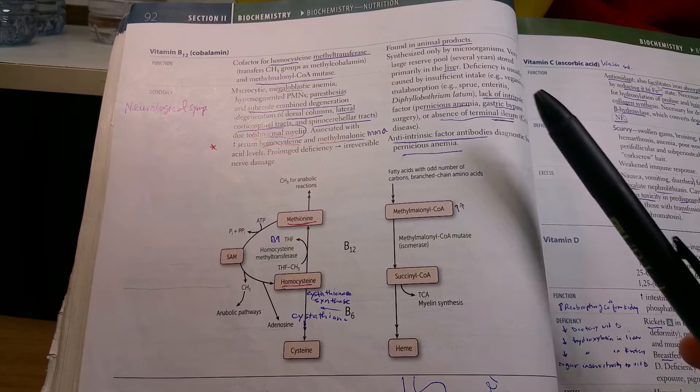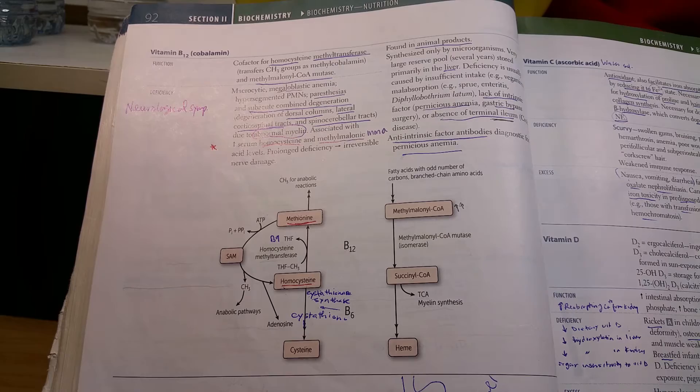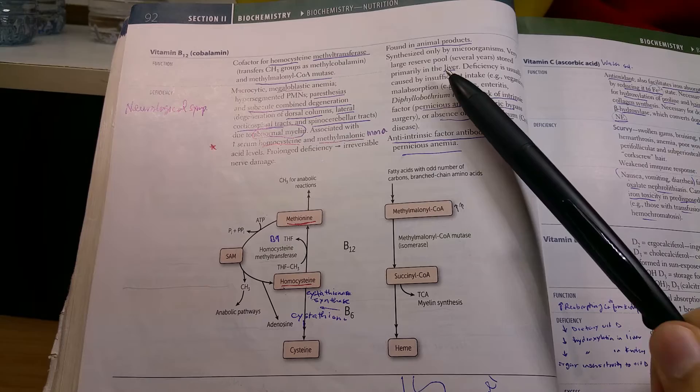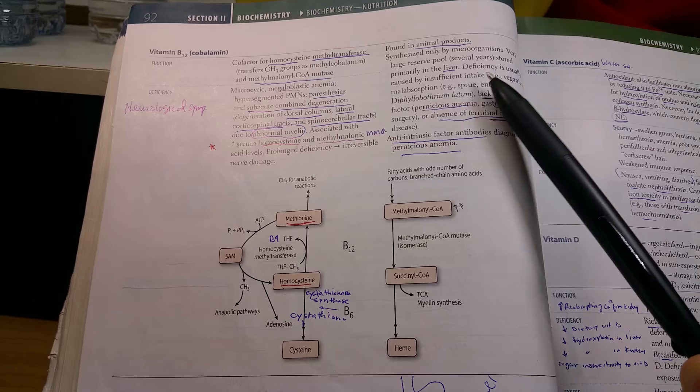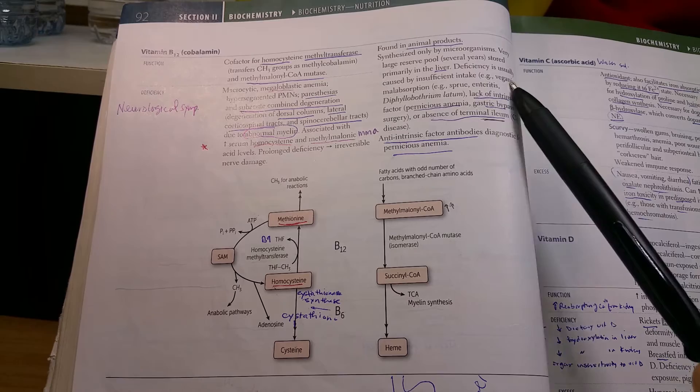It is found in animal products, and there is a very large deficiency in vegans who don't take supplements. But it's stored in the liver, which has a very large reserve pool.